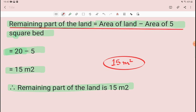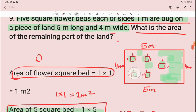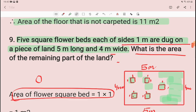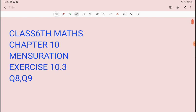Remaining part of the land is equals to area of land minus area of 5 square beds. 20 minus 5 will be 15 meter square. Remaining part of the land is 15 meter square. So two questions we have seen, 8 and 9. Three more are left, we will cover in the next video. If you liked it, please like, share, and subscribe. Thank you.